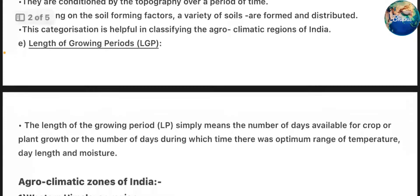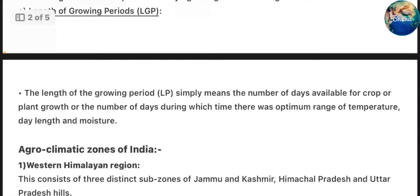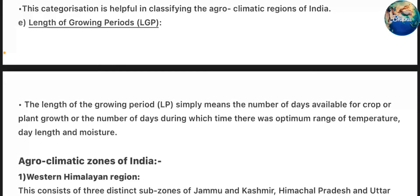Length of Growing Periods: The length of growing period simply means the number of days available for crop or plant growth, or the number of days during which there was an optimum range of temperature, day length, and moisture.